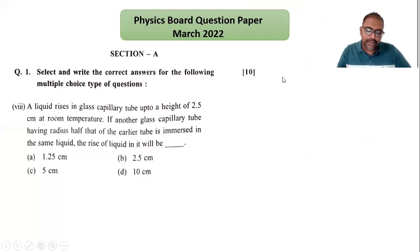So here let's see the solution of this question. Liquid rises up to a height, so I can name this height as h1. So h1 equals 2.5 cm.